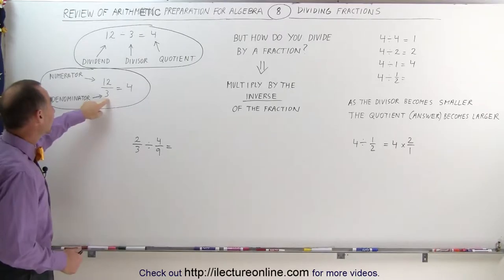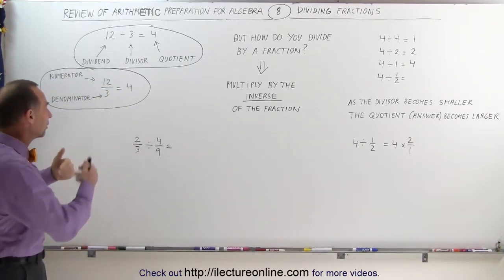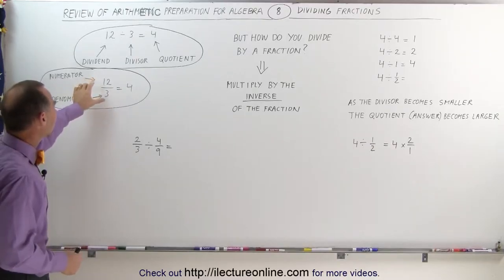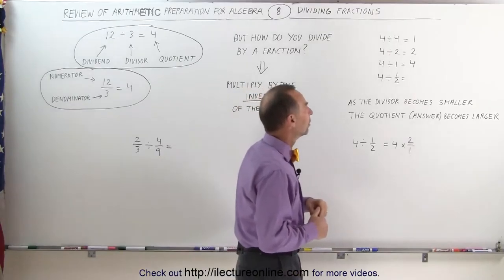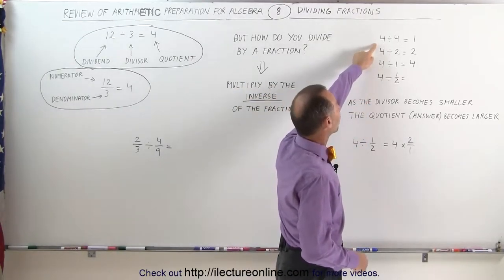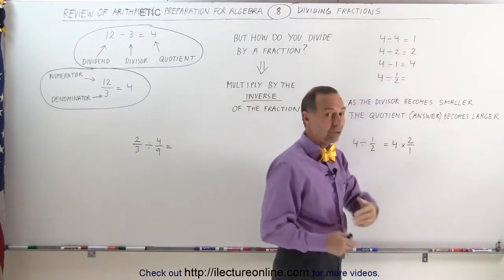Notice the similarity between that and the fraction. In the fraction, we call the number on top the numerator, which is really the dividend, and on the bottom, we call this the denominator, which is really the divisor. We divide the 3 into the 12, we get the answer 4, which is the quotient. So that's the similarity between fractions and what they could potentially stand for.